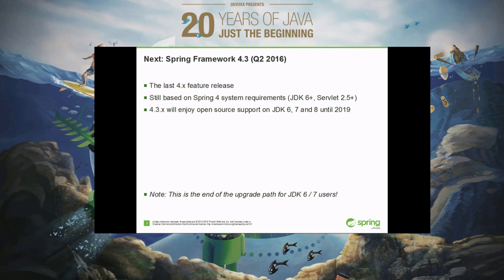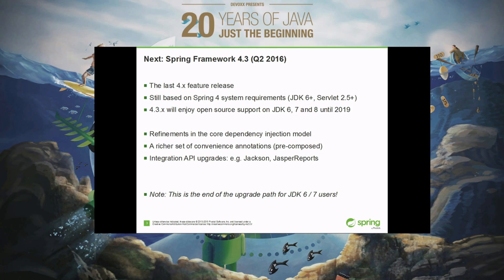4.3 is planned to have an extended open source support life, similar to Spring Framework 3.2.x right now — we're already working towards 3.2.16. The idea is that if you're a JDK 6 or 7 user, or just happy with your existing Spring Framework usage, Spring Framework 4.3 is what you're supposed to upgrade to, because that's the one with the extended support life. 4.2 will only have regular support until 4.3 is out plus a few months, but 4.3 is going to be supported until 2019 easily.